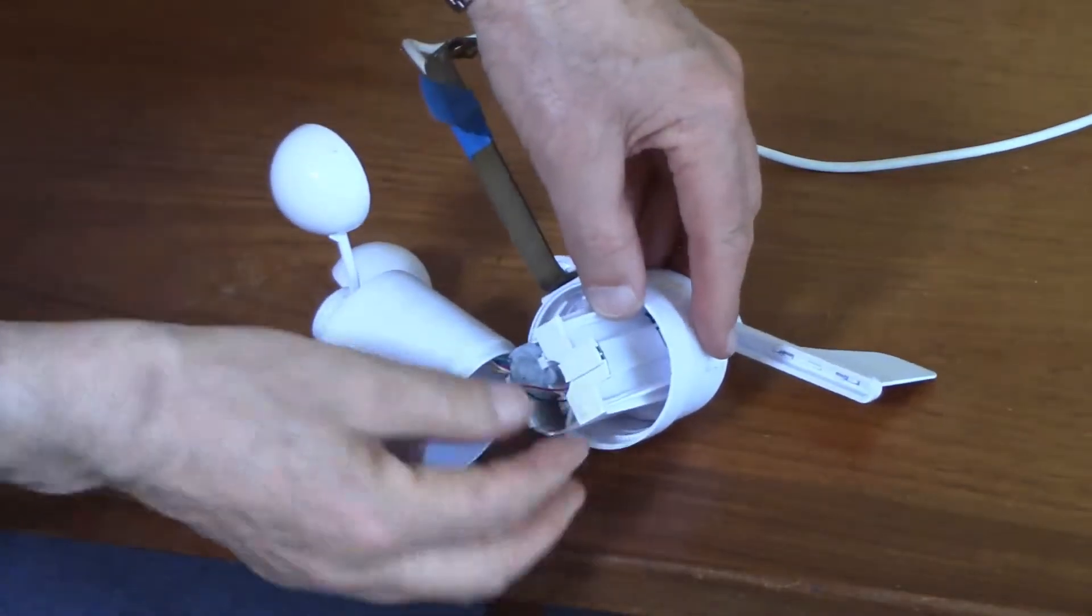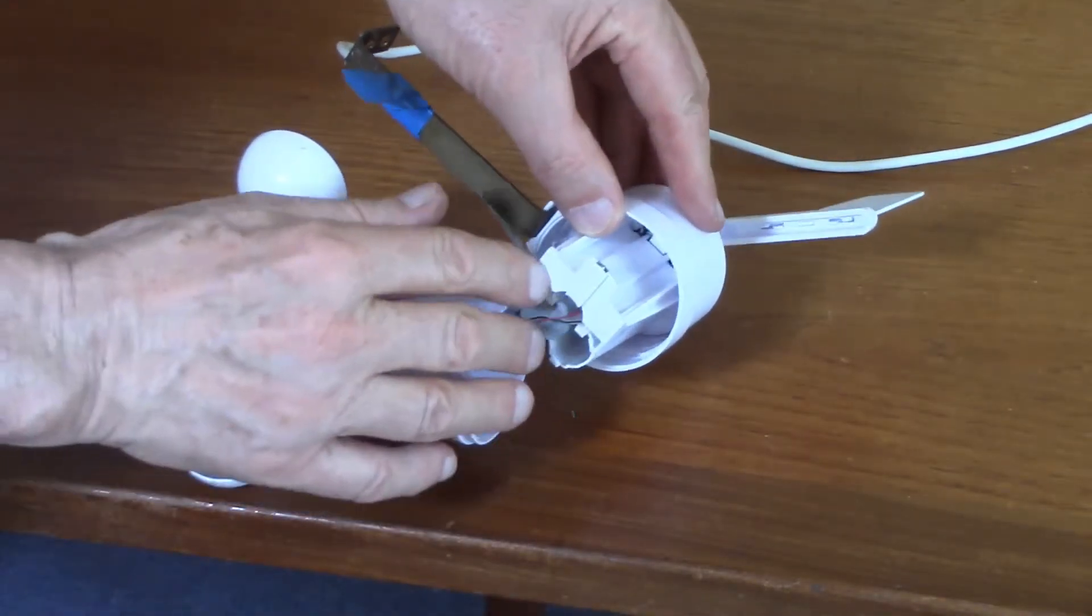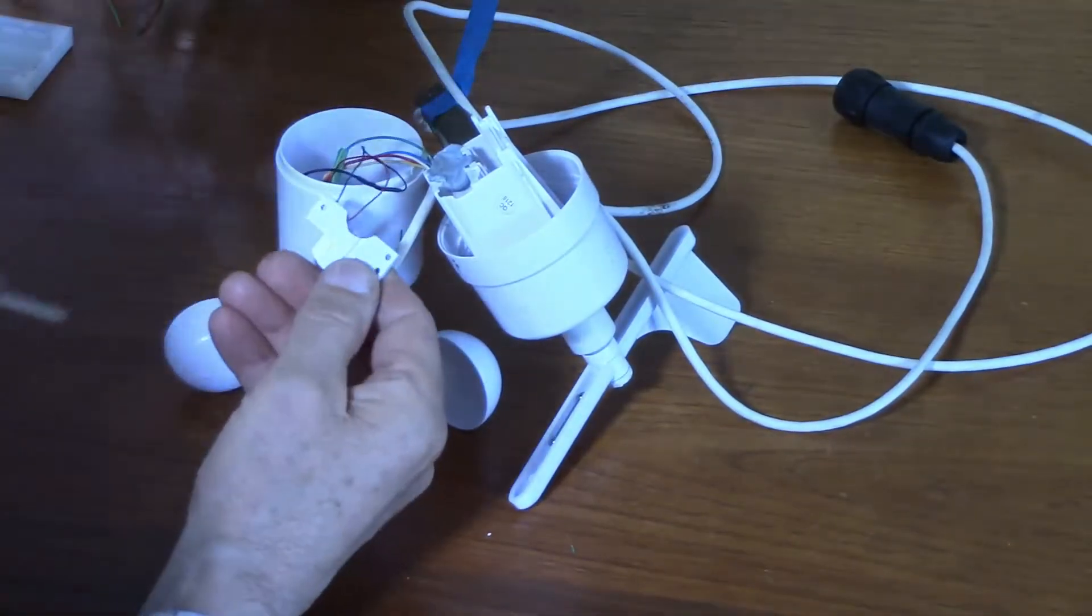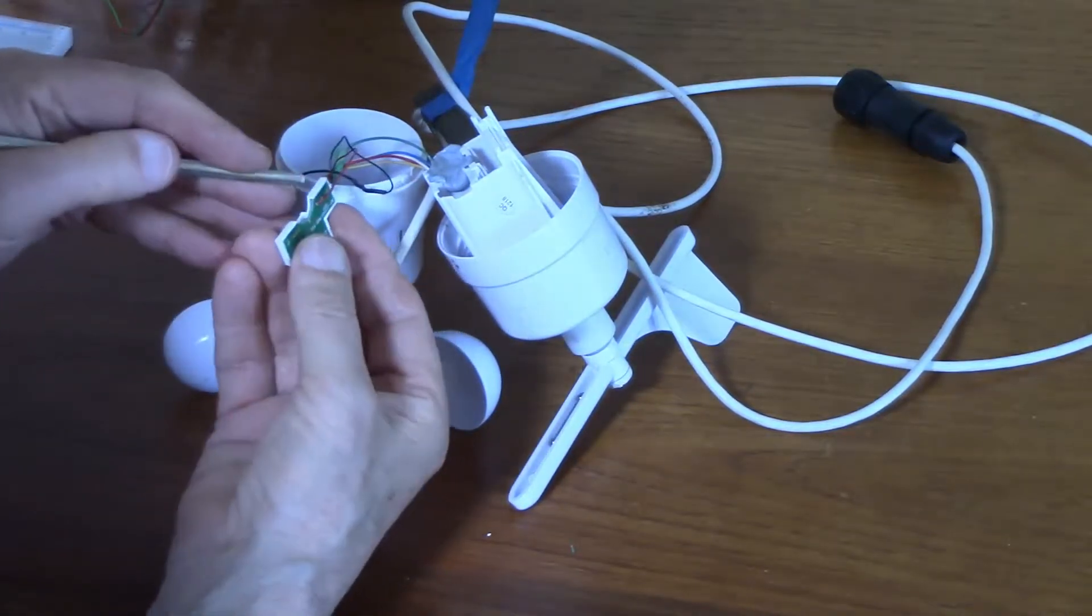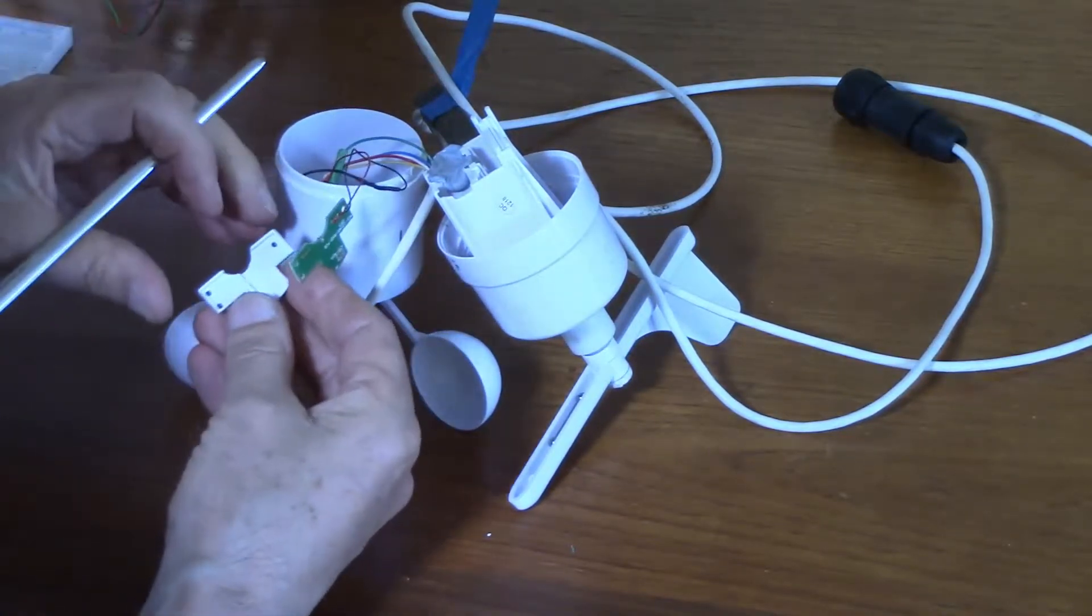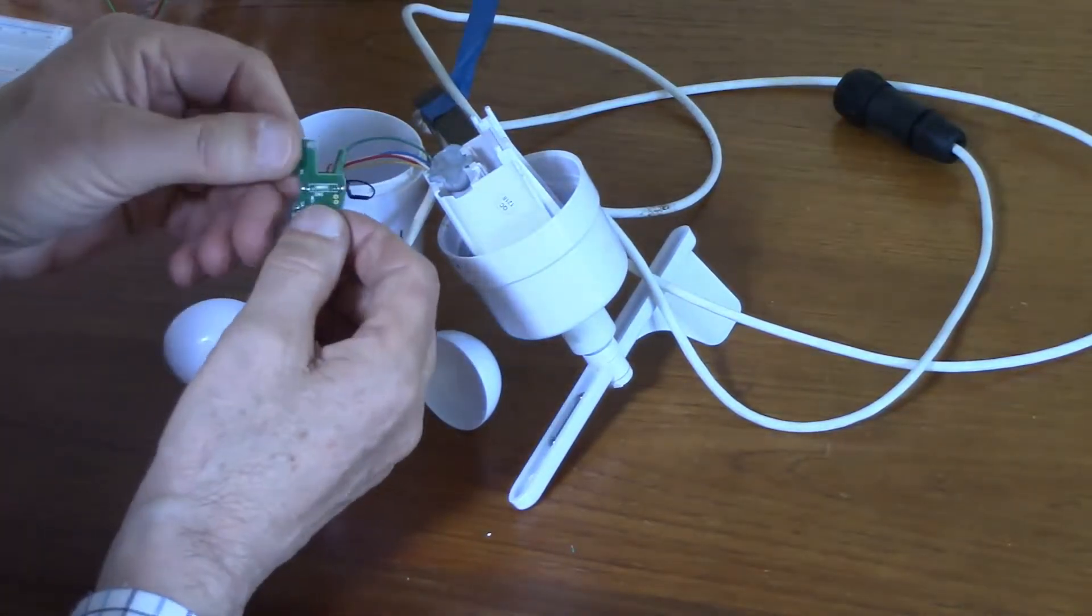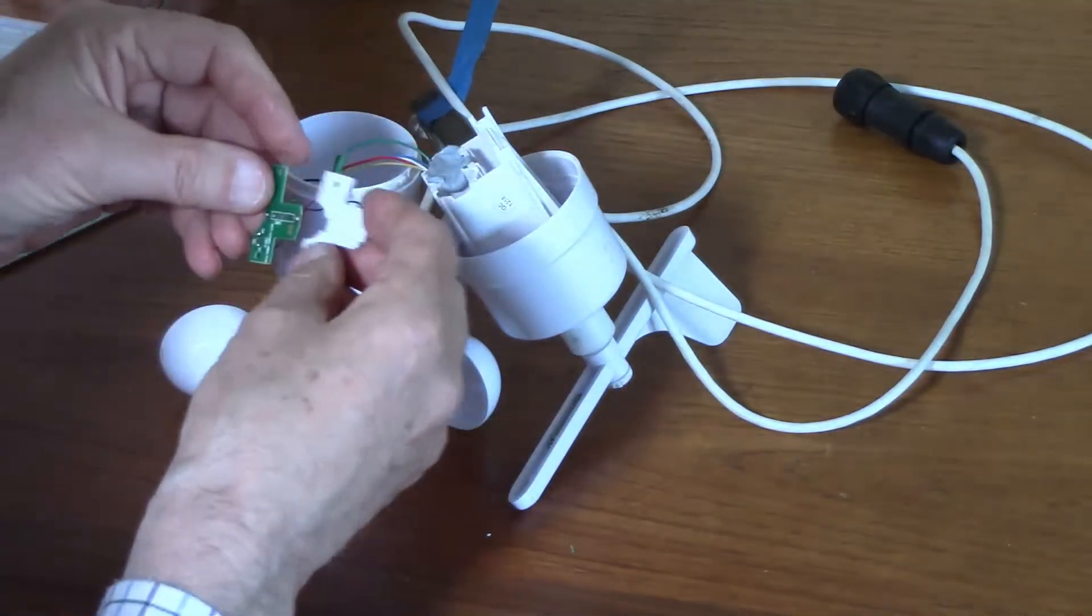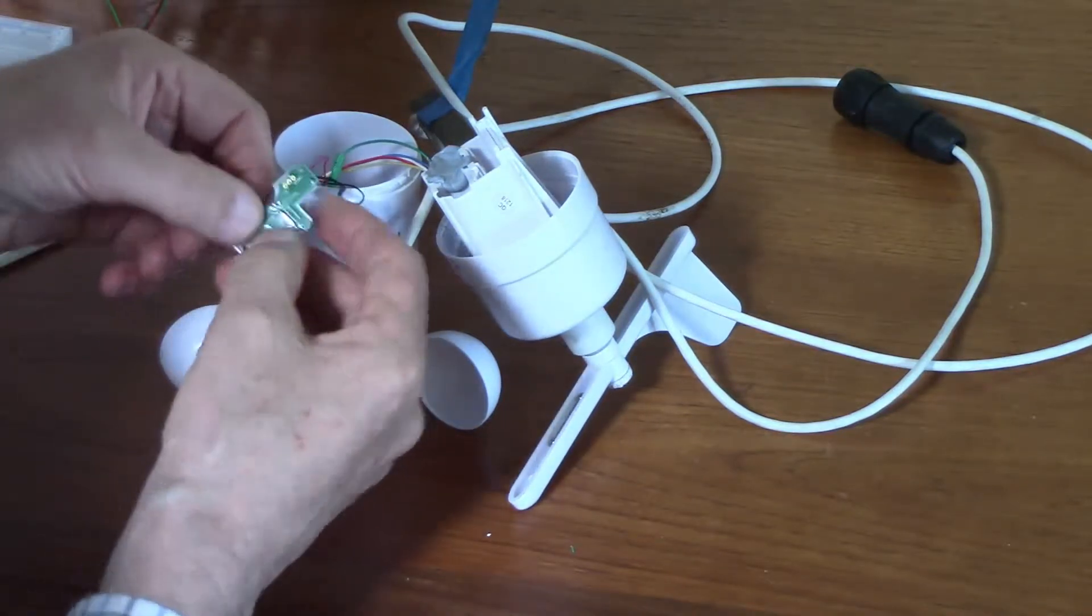But first I've got to get this bit of plastic off by drilling out these three plastic posts. I couldn't drill them out but I've just cut them with a Stanley knife. So hopefully this PC board will come out now. And there is the reed switch.